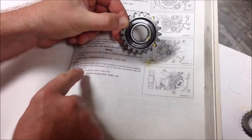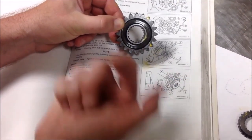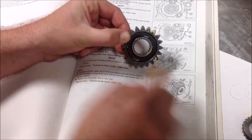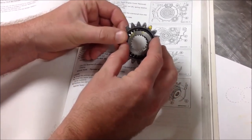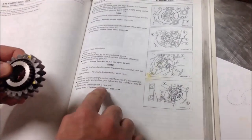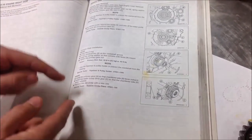They're pointing to this: the chamfered edge faces outward or faces you. So the paint marks we have, it was installed in the correct direction. Then it says put the water pump drive gear on with the chamfered edge facing out, and replace the circular clip with the new one. Guys, it's just a checklist. It's what we've been talking about, it's right there.